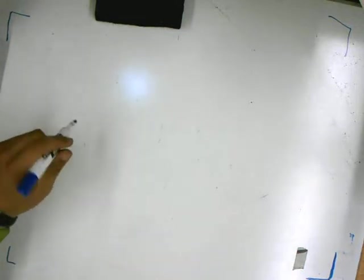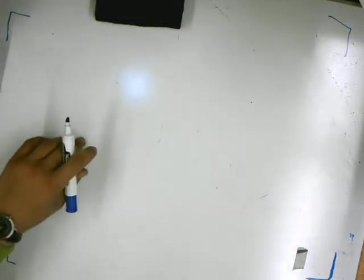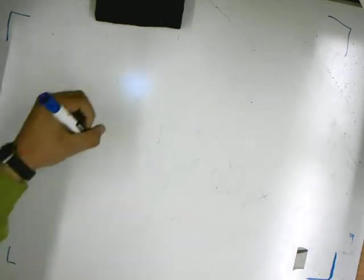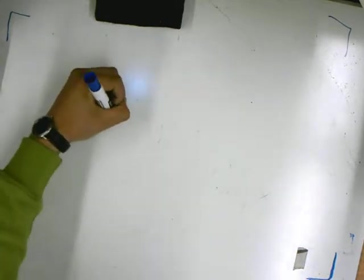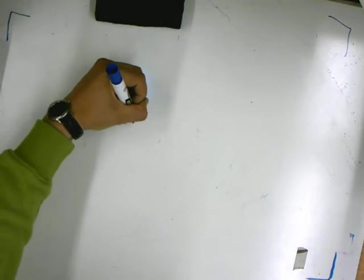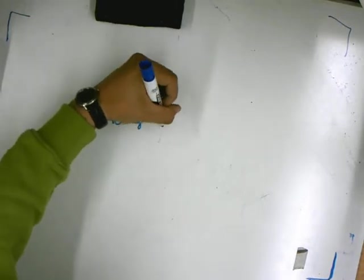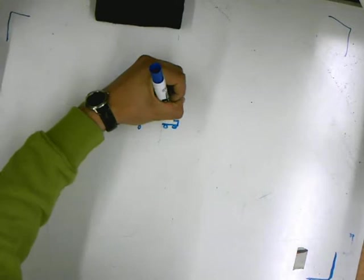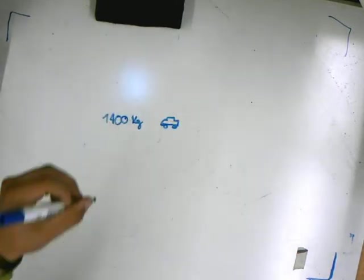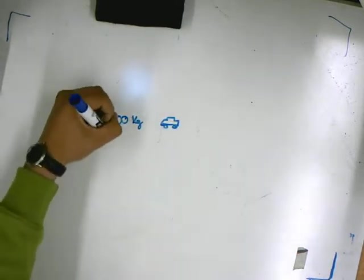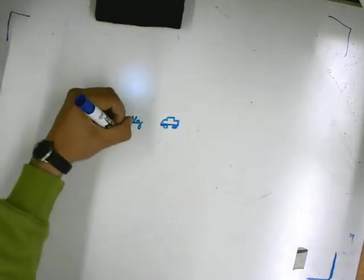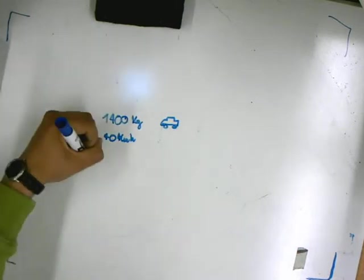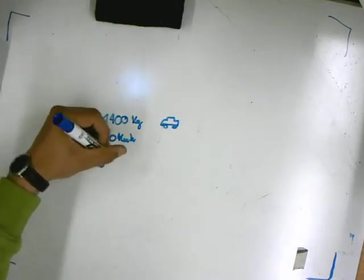In this kinetic energy problem, we have to calculate the kinetic energy of a 1400 kilogram car. This car has a speed of 40 kilometers per hour, and we want to calculate the kinetic energy.